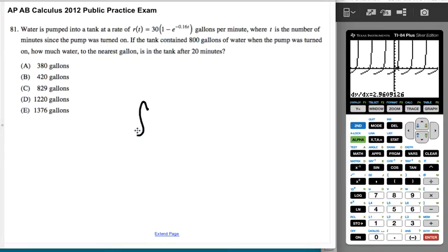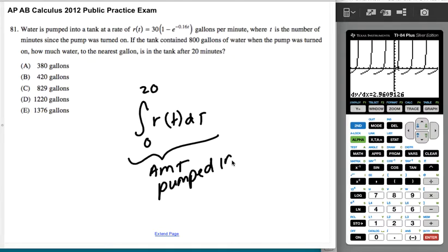Okay, so if you integrate from 0 to 20 of this r of t dt, this is going to be the amount pumped in from t equals 0 to t equals 20.